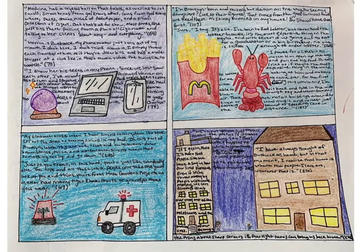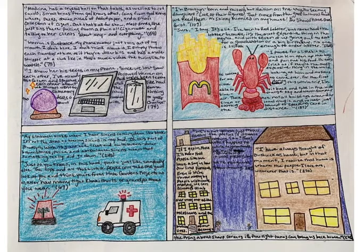Zuri says: "Madrina has a crystal ball on that table as well as tarot cards, small bones from God knows what, coins from God knows where, shells, stones, pieces of folded paper, and a small collection of cigars, but that's all for show. Most times she just sits there pulling from a plain old cigarette and talking to her clients about any and everything." This shows Zuri's initial lack of understanding and naivety towards single stories of this nature.